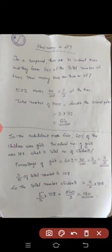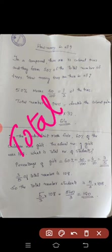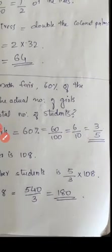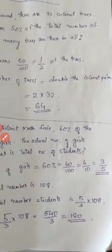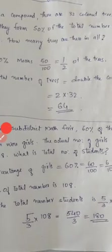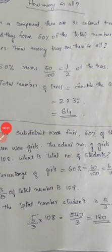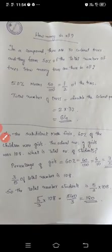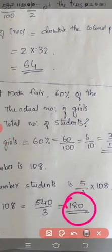Now, total number is equal to 108 multiplied by 5 by 3. That is 108 into 5 divided by 3, which equals 180. So total number of students in the class is 180.